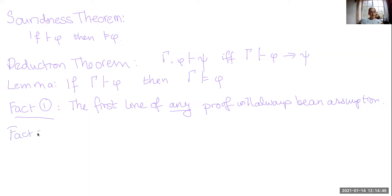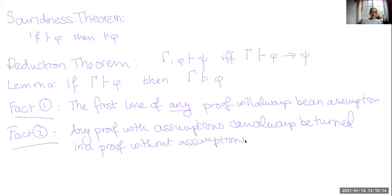Fact 2: Any proof with assumptions can always be turned into a proof without assumptions. This is basically just restating the deduction theorem. Every assumption in Γ can be turned into the antecedent of a conditional. Fact 2 doesn't need further justification—it just is the deduction theorem.